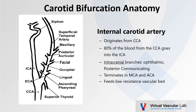We'll do a real quick review of the carotid bifurcation anatomy. We have the common carotid bifurcating into the external and the internal carotid artery. The internal originates from the CCA, and the majority of blood from the CCA goes into the ICA. Generally, it has no extracranial branches. There are a couple of intracranial branches — the ophthalmic and the posterior communicating. The ICA terminates into the middle cerebral and the anterior cerebral arteries, with low resistance flow feeding a low resistance vascular bed.